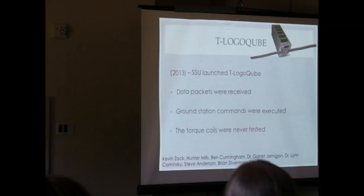So in 2013, several students did a lot of work and launched T-Logo Cube. So this satellite went into space. Data packets were received. It executed commands from the ground station. But it had a torque coil on it that was never used. They were afraid of an electrical failure or something. So they never used it. So in the next satellite, it's going to be called, I think, the Spin Cube.